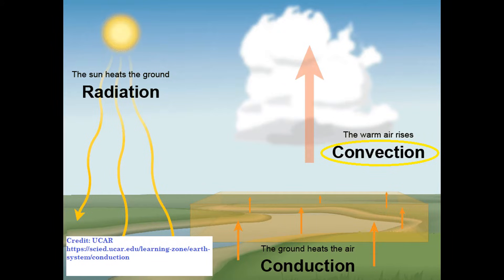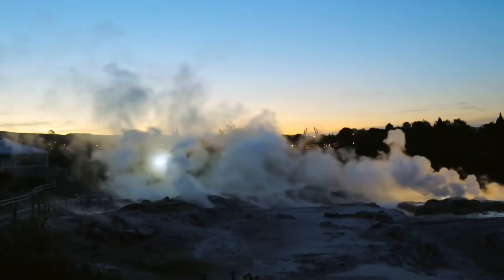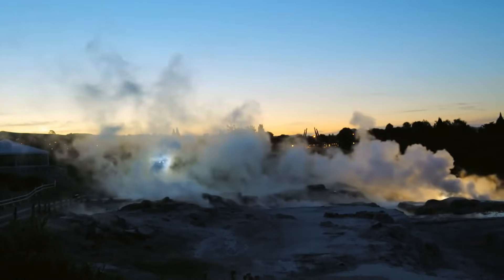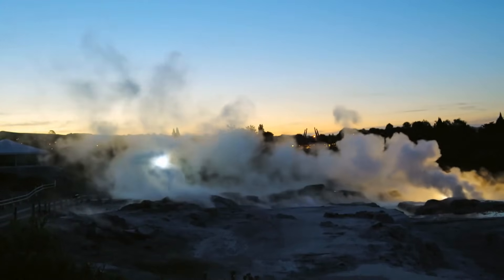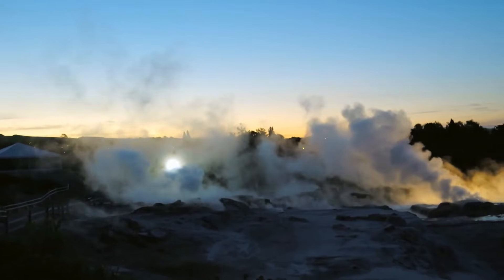Since the earth has large amounts of land and water, the differences in these heating patterns cause something known as convection currents. Convection currents are areas where either air or water moves due to uneven heat. The warmer material rises while the cooler material sinks. Global convection currents are set up in the atmosphere because of the unequal heating of earth's surfaces.